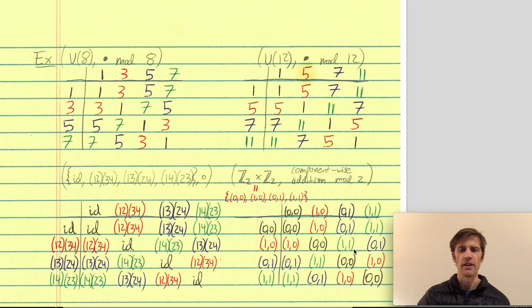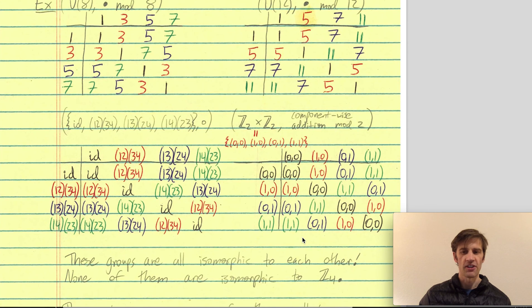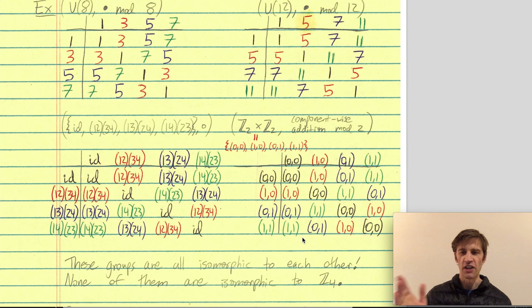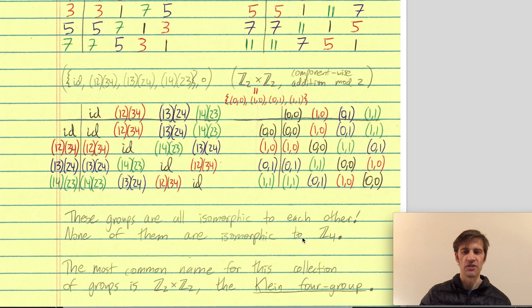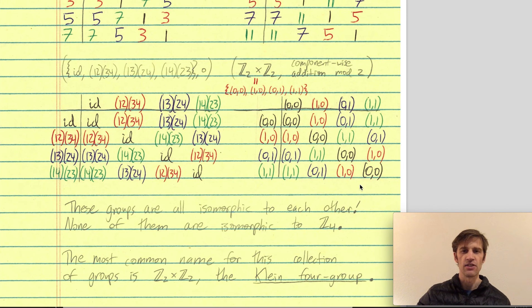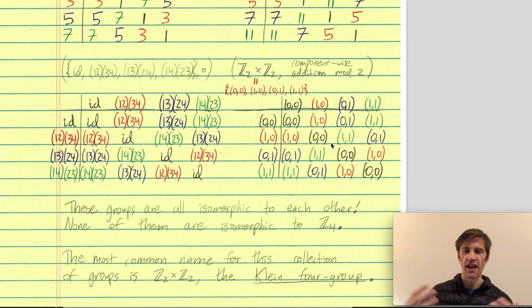This checkerboard pattern will come up again in a moment. Notice that the black and red checkerboards both have black on the main diagonal going from top left to bottom right. These groups are again all isomorphic to each other, and none of them are isomorphic to the groups we saw above. The most common name for this collection is Z2 cross Z2, or the Klein 4 group. If you find a group with this structure, you'll say: this group is isomorphic to Z2 cross Z2, the Klein 4 group.